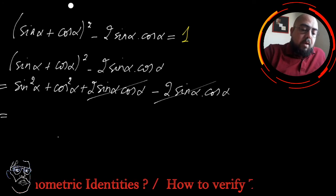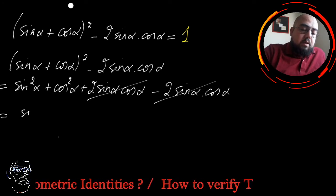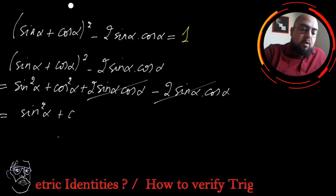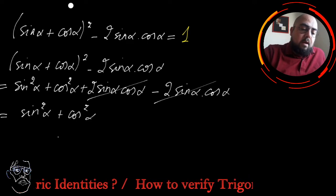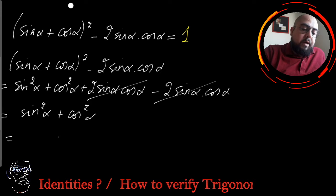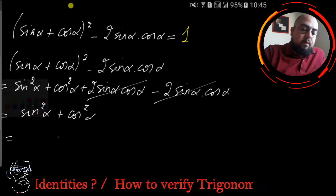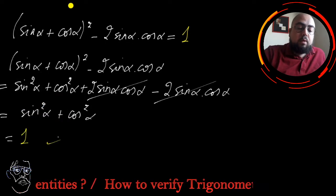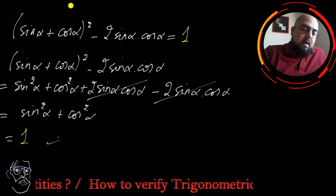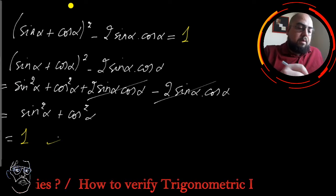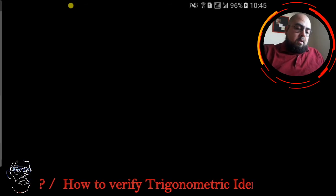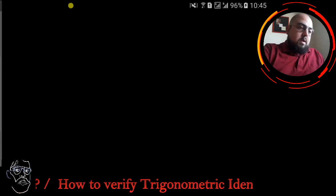What remains is sine squared alpha plus cosine squared alpha, which equals 1. So I was able to verify this first identity.